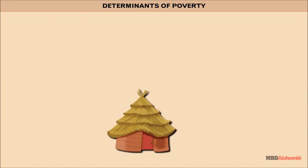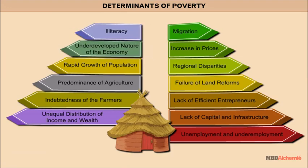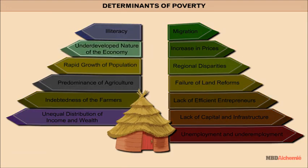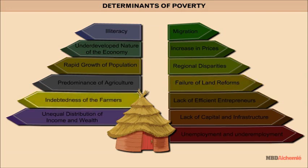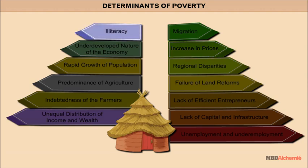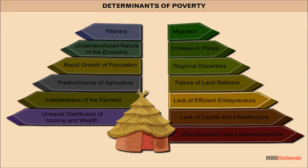Determinants of poverty include: underdeveloped nature of the economy, rapid growth of population, predominance of agriculture, failure of land revenues, indebtedness of farmers, migration, increase in prices, illiteracy, unequal distribution of income and wealth, lack of capital and infrastructure, unemployment, underemployment, lack of efficient entrepreneurs, and regional disparities.